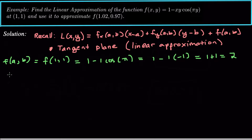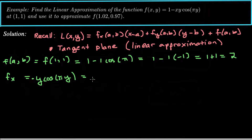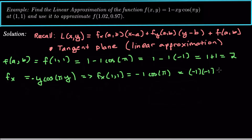Now we need to find f_x — the partial derivative with respect to x. Everything else is treated like a constant, so the partial derivative is negative y cosine(pi*y). Evaluating f_x at (1,1): that's negative 1 times cosine of pi. Cosine of pi is negative 1, so this is negative 1 times negative 1, which equals 1.